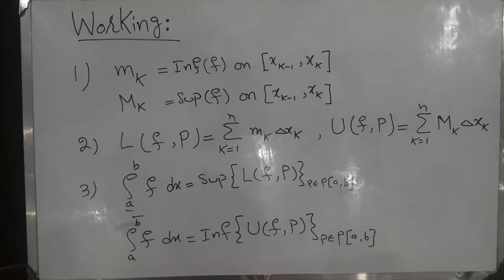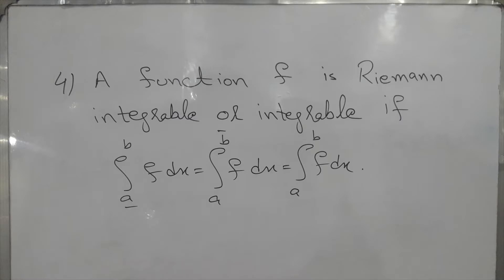Secondly, the lower sum is equal to the summation, where k varies from 1 to n, of m_k · Δx_k. Thirdly, we see the definitions of the lower integral and upper integral. Fourth, a function f is Riemann integrable if the lower integral of f dx equals the upper integral of f dx, and this common value equals the integral from a to b of f dx.